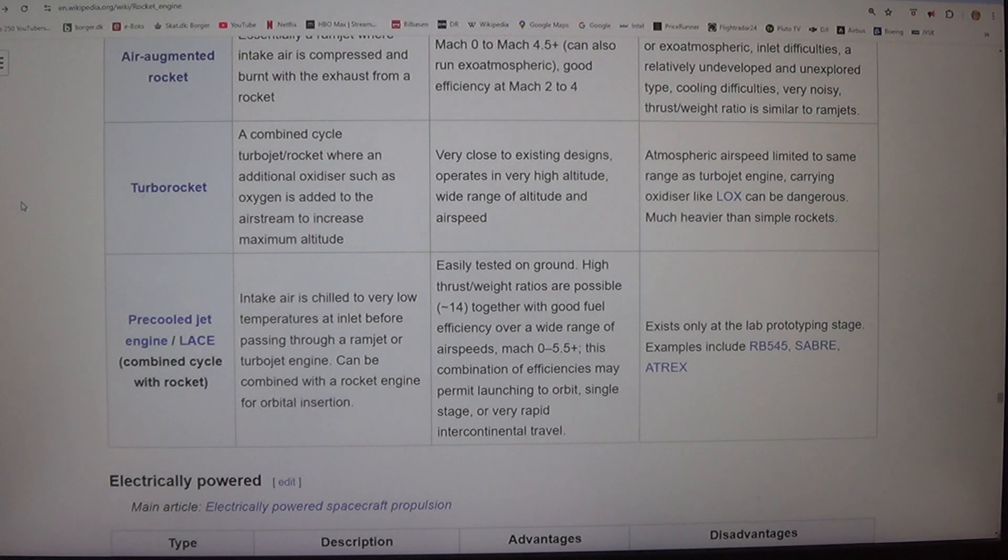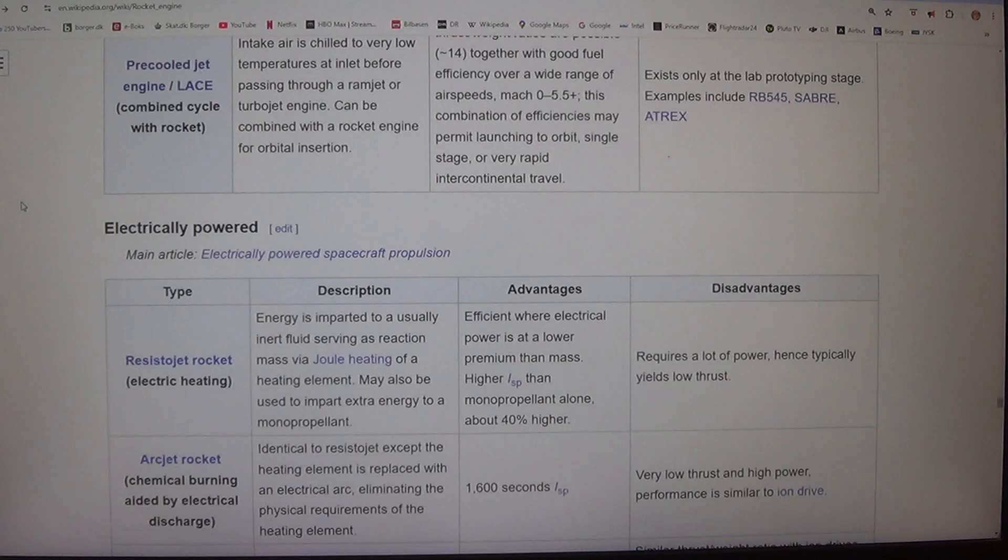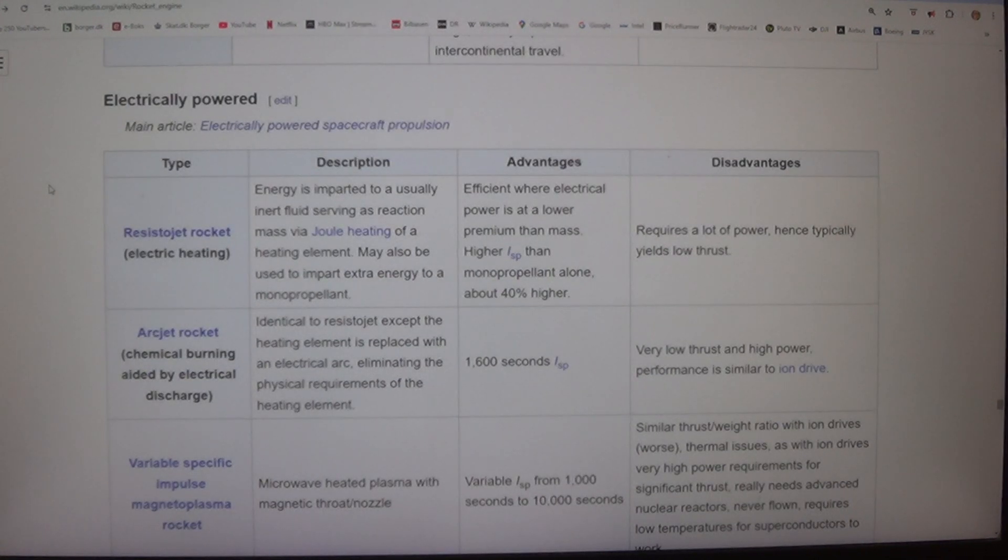Electrically powered spacecraft propulsion. Resistojet rocket - electric heating. Energy is imparted to a usually inert fluid serving as reaction mass via Joule heating of a heating element. May also be used to impart extra energy to a monopropellant. Efficient where electrical power is at a lower premium than mass. Higher ISP than monopropellant alone (about 40% higher). Disadvantages: Requires a lot of power. Hence typically yields low thrust.